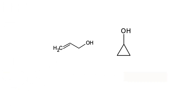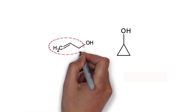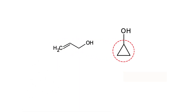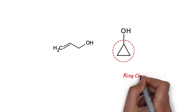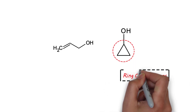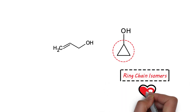Similarly, these two molecules are ring-chain isomers of each other. As you can see, the unsaturated part can be transformed into a cyclic ring system, so they have the same molecular formula — but one is the open-chain unsaturated system while the other is a cyclic system. These are also ring-chain isomers. I hope you understand it. If you like my videos, please subscribe and share.